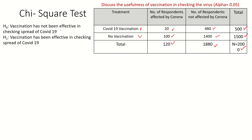This is the hypothesis we have developed. H0, the null hypothesis, states: vaccination has not been effective in checking the spread of coronavirus. This is the null condition — that vaccination had no effect.